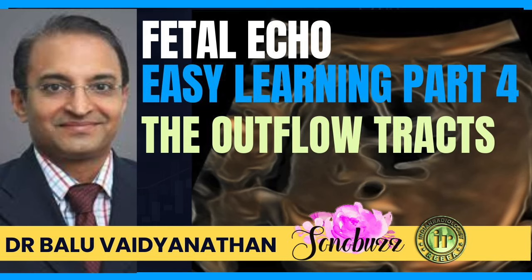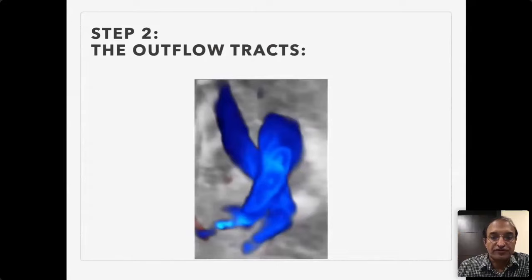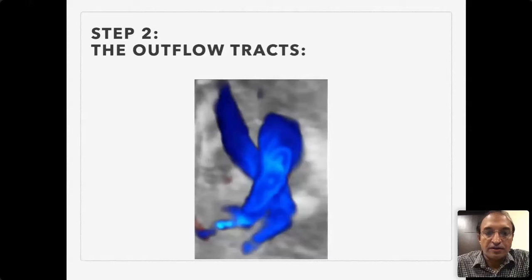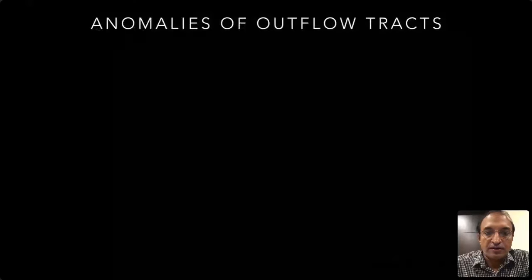Now let us move on to the outflow tracts. The characteristic feature of the outflow tracts is that they cross each other. The first outflow tract is the LVOT, which goes from left to the right side, and the second outflow tract is the RVOT, which goes from the right side towards the spine — that's the pulmonary artery.